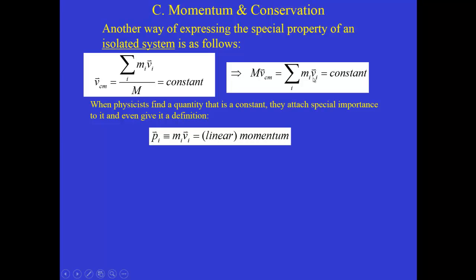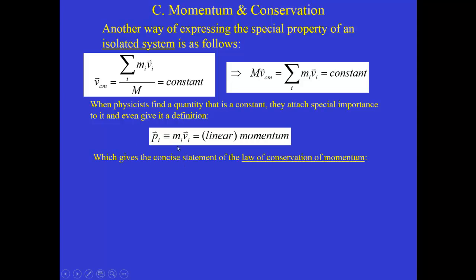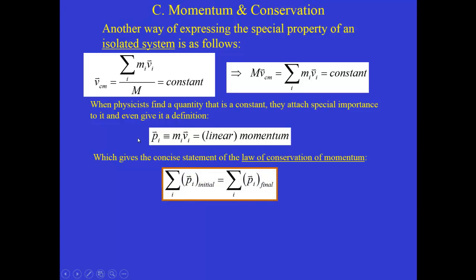Mass times velocity — where velocity is a vector — we define as p, and we call this the momentum, or more accurately the linear momentum of the system. This distinguishes it from angular momentum, which we'll define later for rotating systems. Recognizing that the sum of mv over all objects in the system is constant, we can write down the law of conservation of momentum: whatever that sum is at some initial configuration, it will always equal that value.